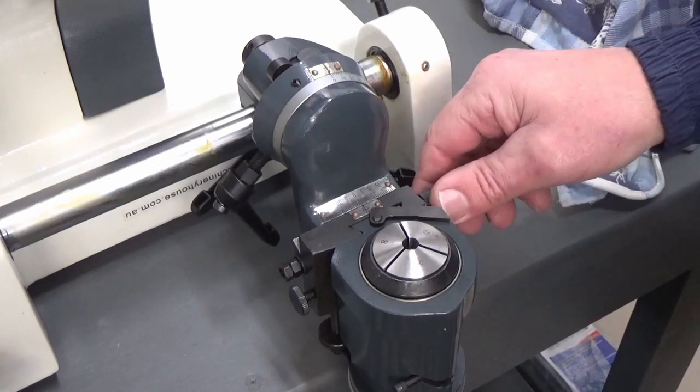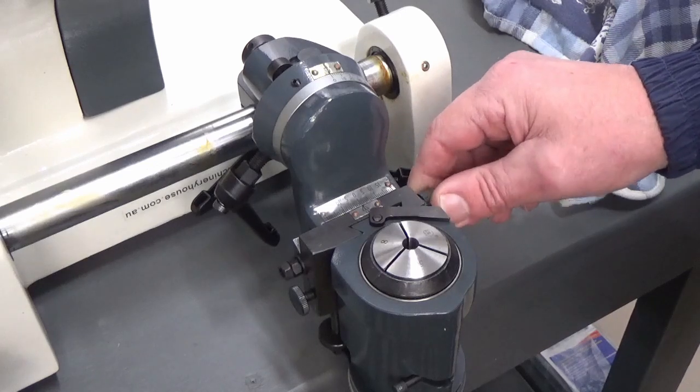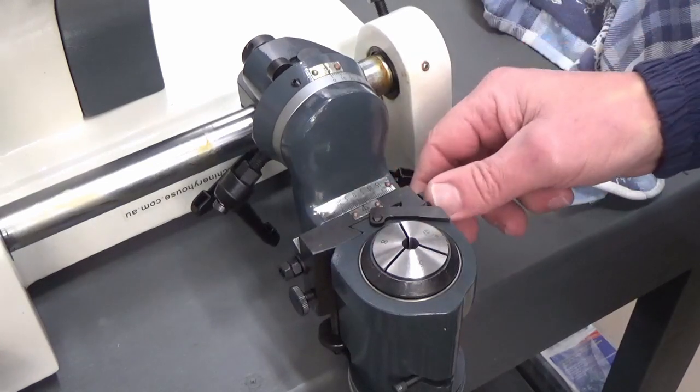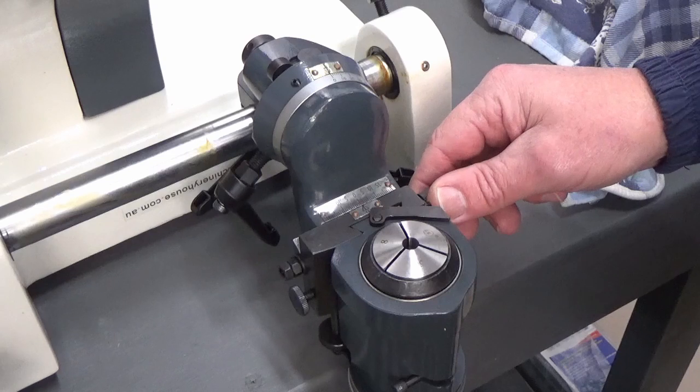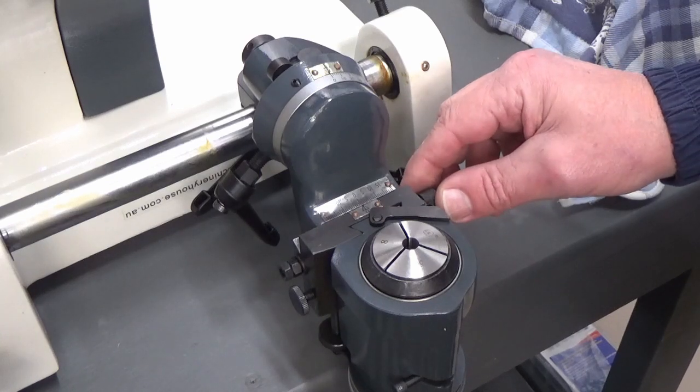Now the adjustment is done through this side control here which allows you to move it left and right, and consequently what we need to do is to be able to do subdivisions of 1mm.